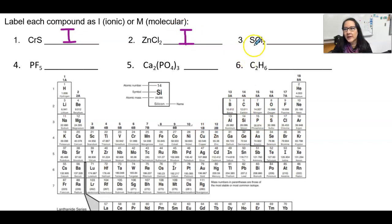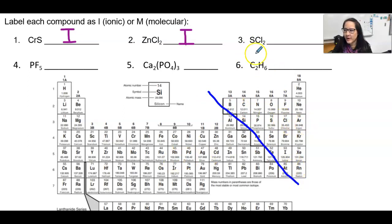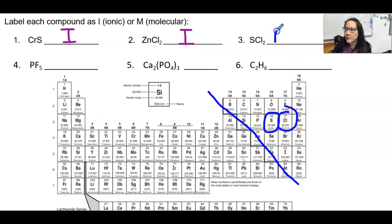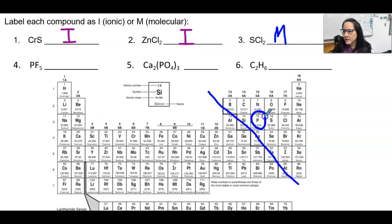Number three is sulfur and chlorine. Here is my dividing line for the metals on the left side and non-metals on the right. We have sulfur, which is here, combined with chlorine, which is also on this side of the staircase. Because these are two non-metals, this is going to be molecular or covalent. Next is PF5 — here is phosphorus and here is fluorine, and because both of these are non-metals, that makes this compound molecular.